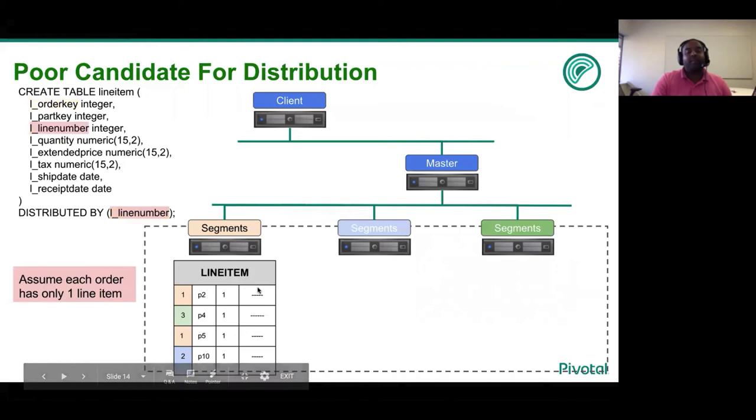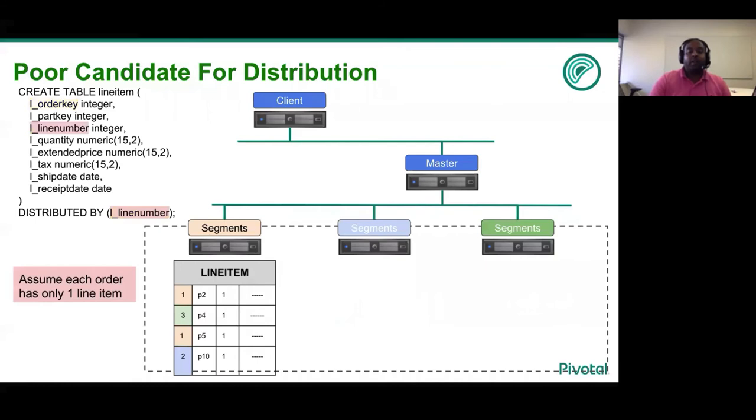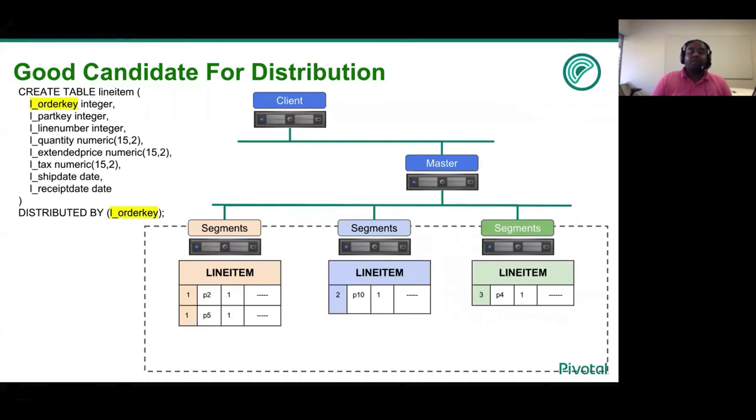In this case, what we will see is that the four line items will be distributed across these three segments. This is in contrast to a poor distribution policy where all of the line items were distributed on the first segment. Therefore, in this case, when you scan line items table, all of the segments are being active.